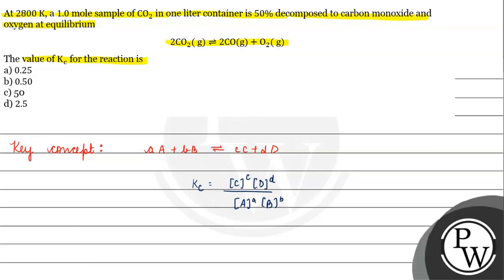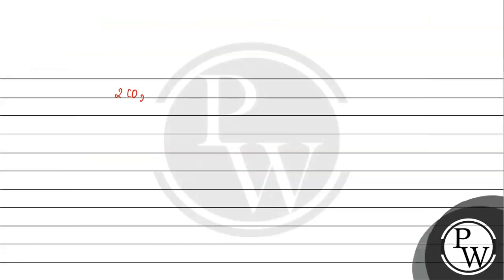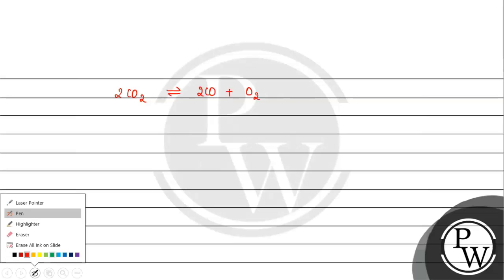Products raised to the power of their stoichiometric coefficients, divided by reactants raised to the power of their respective stoichiometric coefficients. Now, we are going to write the reaction. The reaction is: 2 moles of carbon dioxide decomposes to 2 carbon monoxide and oxygen.